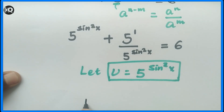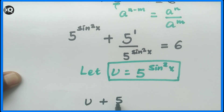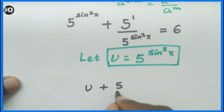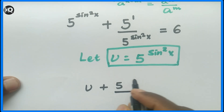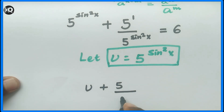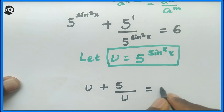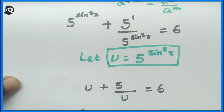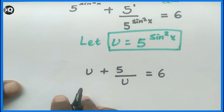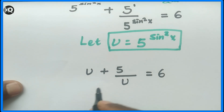Substituting u, the equation becomes u plus 5 divided by u equals 6. Now let's multiply both sides by u.